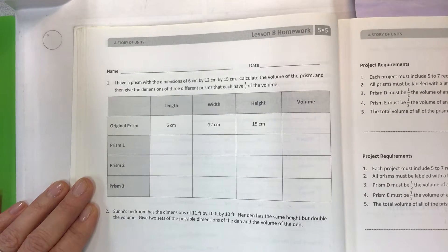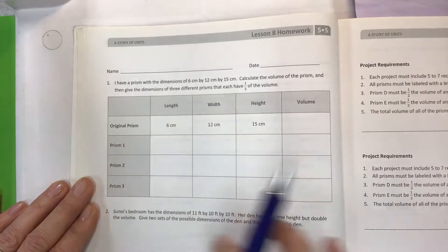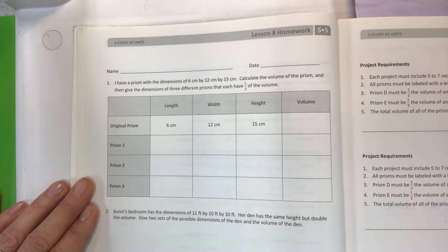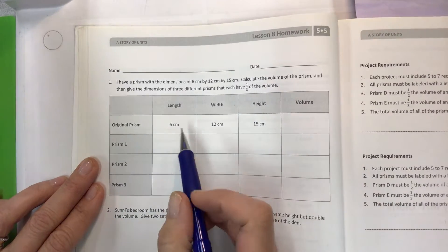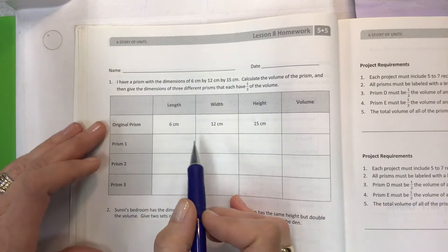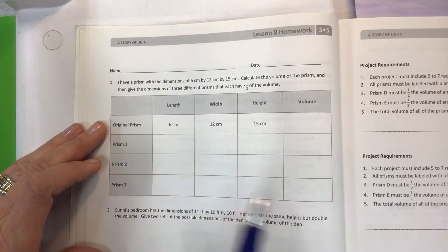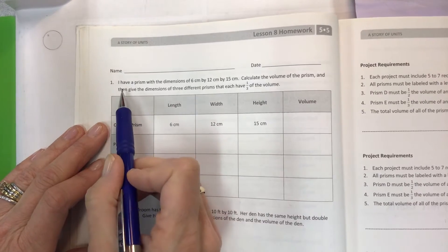In other words, I want to make a rectangular prism, a building, or a structure, but I want to change my dimensions maybe one thing at a time. So let's look at the directions.